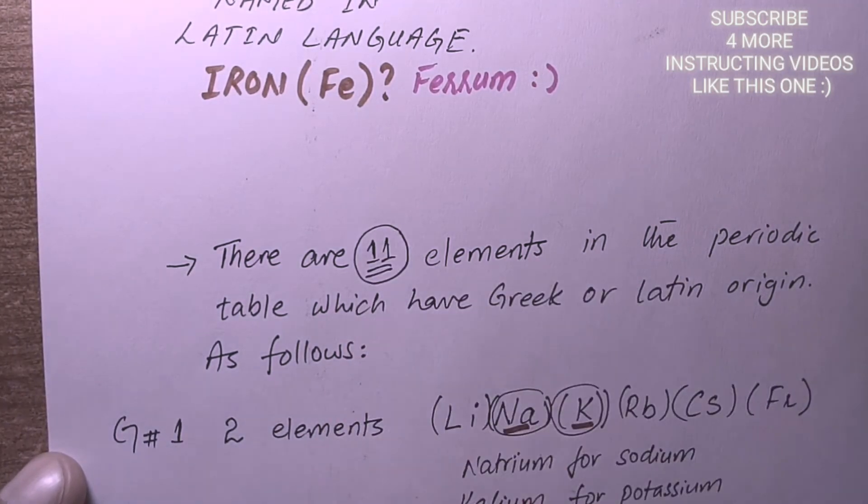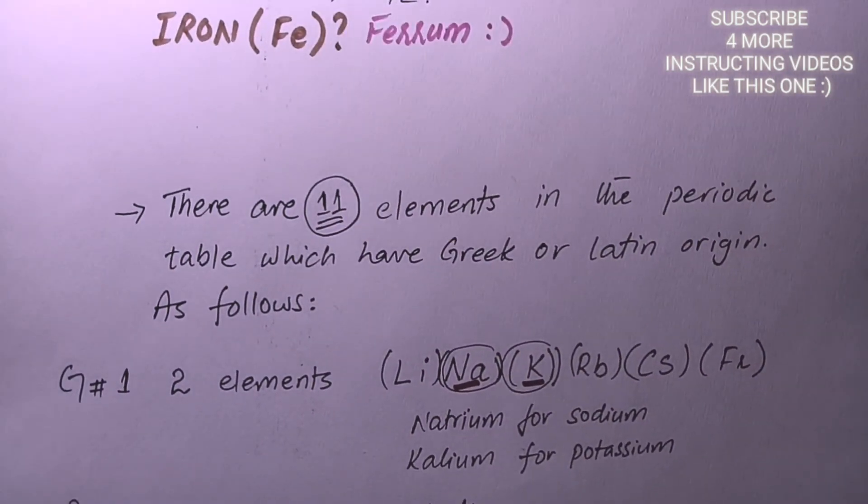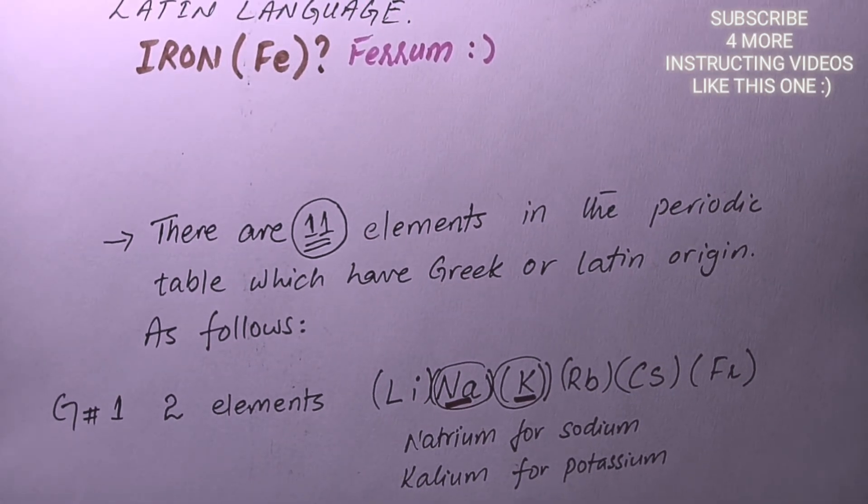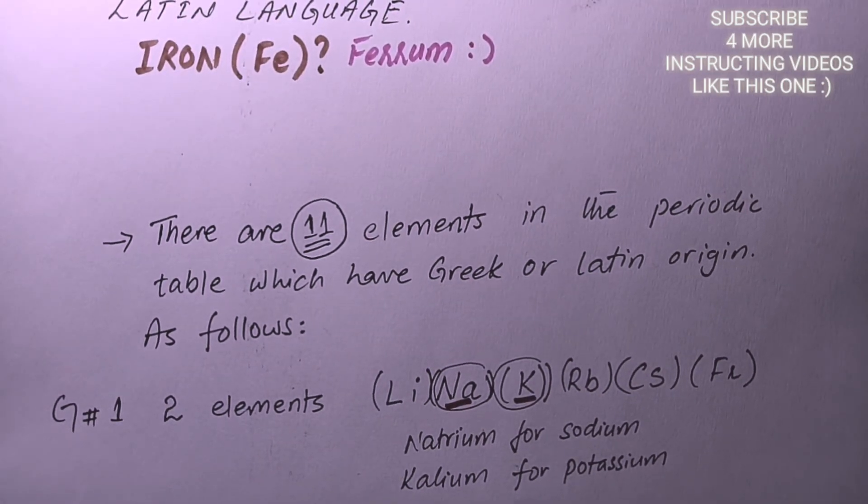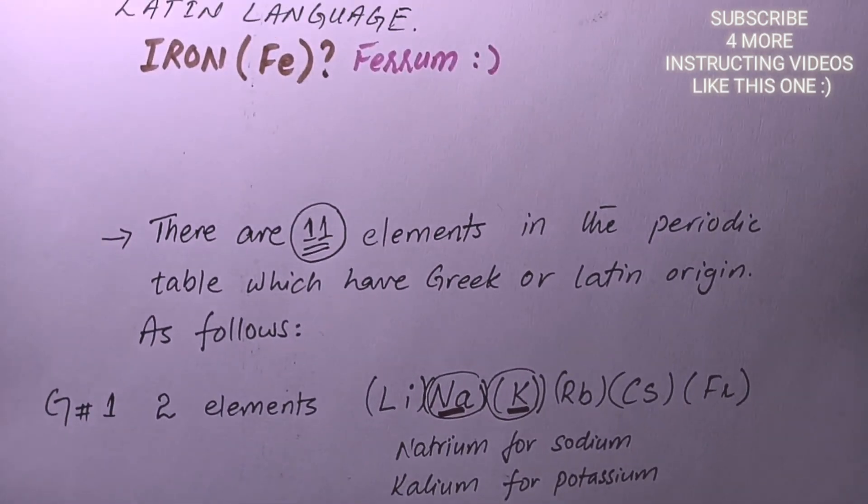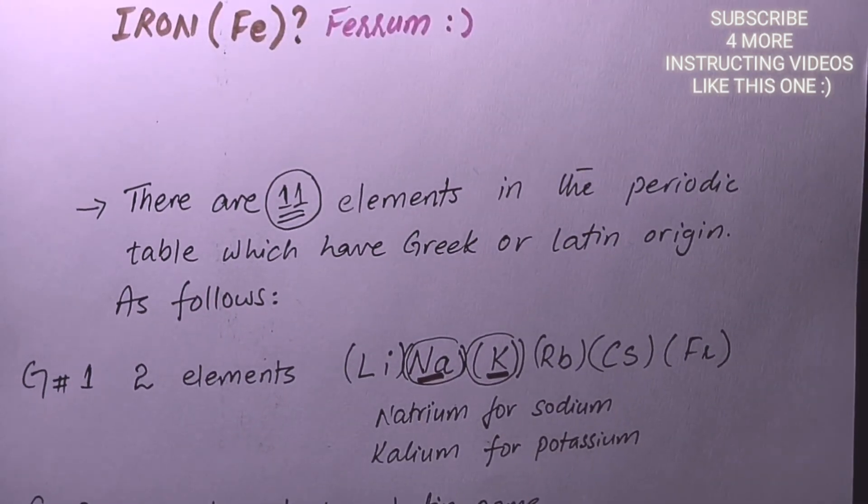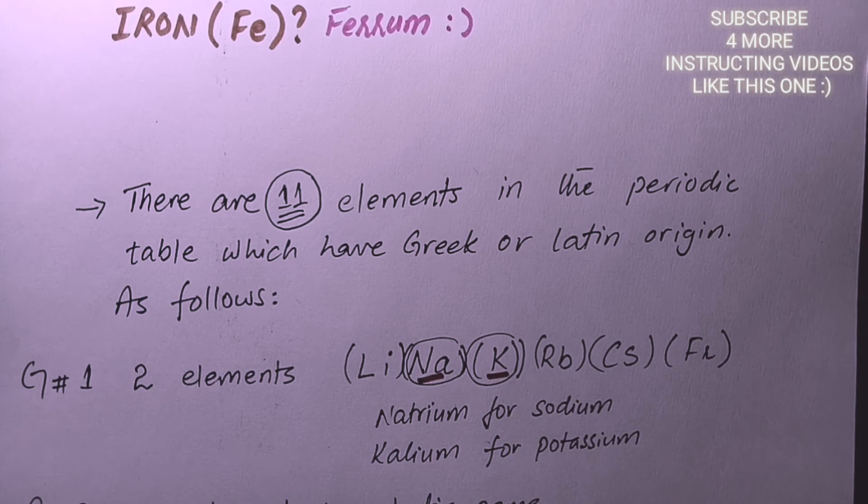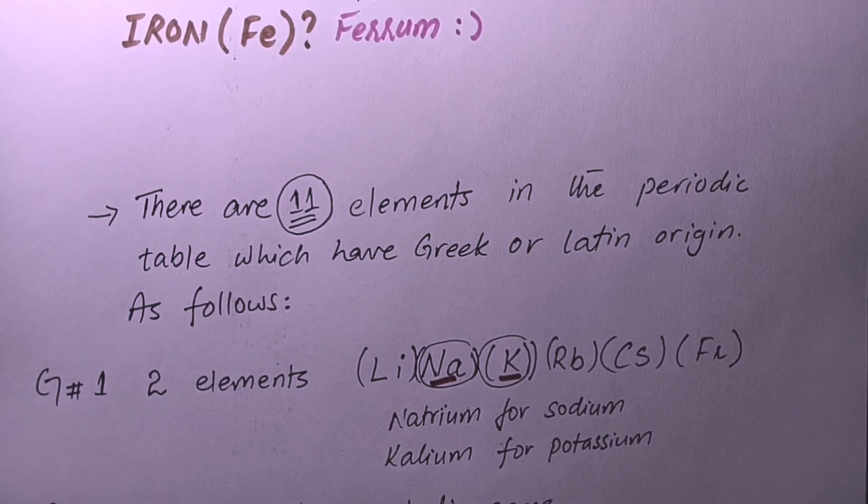That is the right answer for this question: how many elements of the periodic table are named in Latin or Greek language? There are a total of 11 elements. Hope this video brought you information regarding the Latin named elements. Thank you so much for watching.